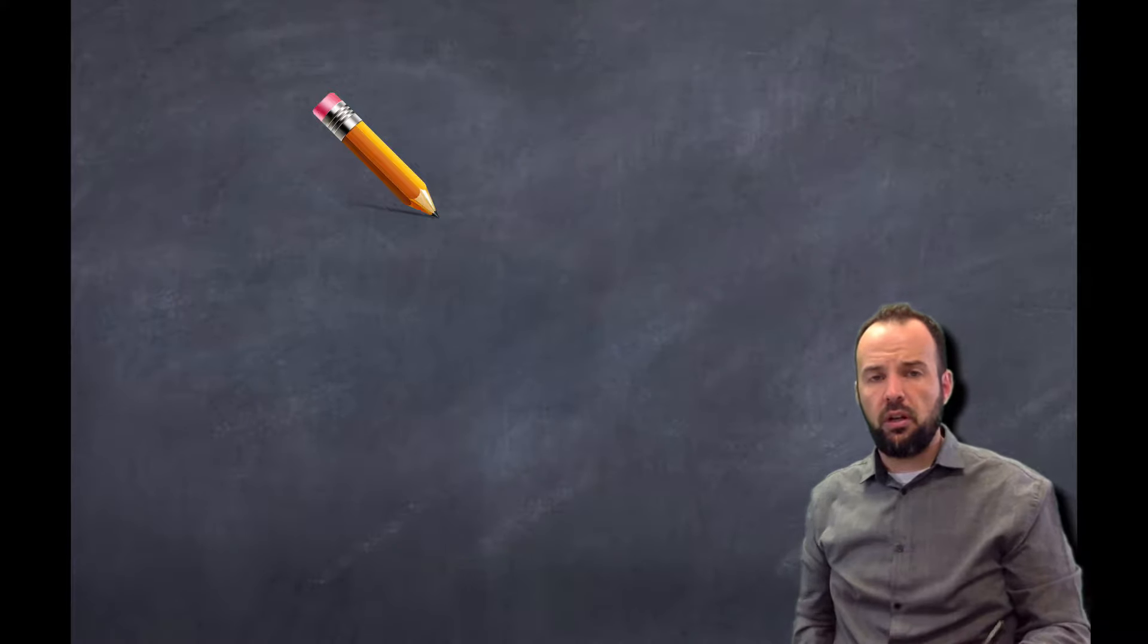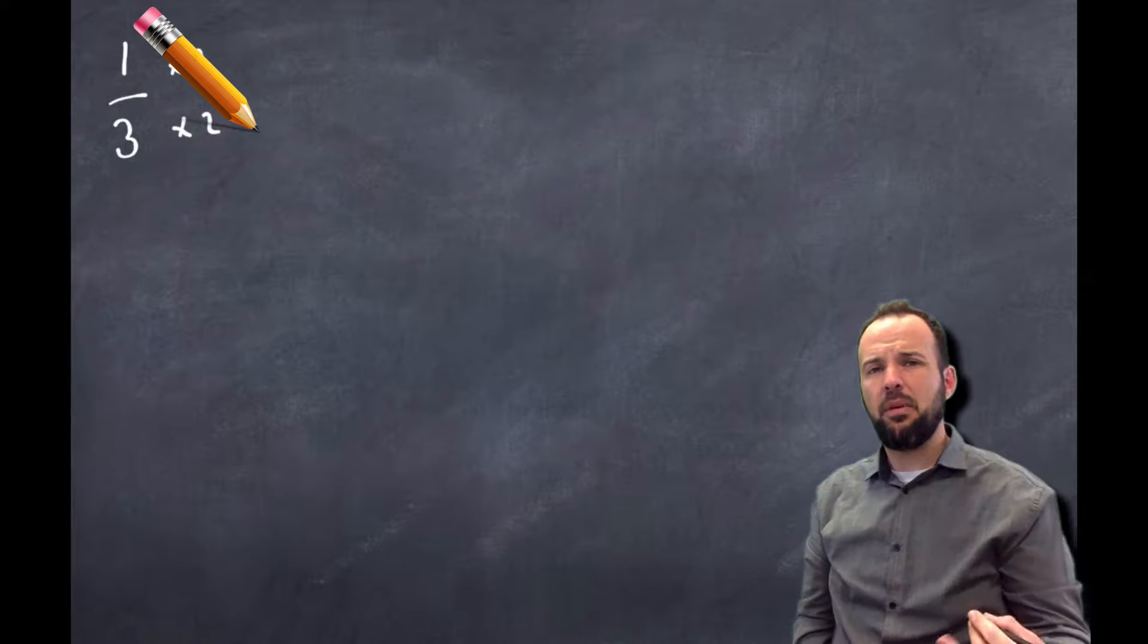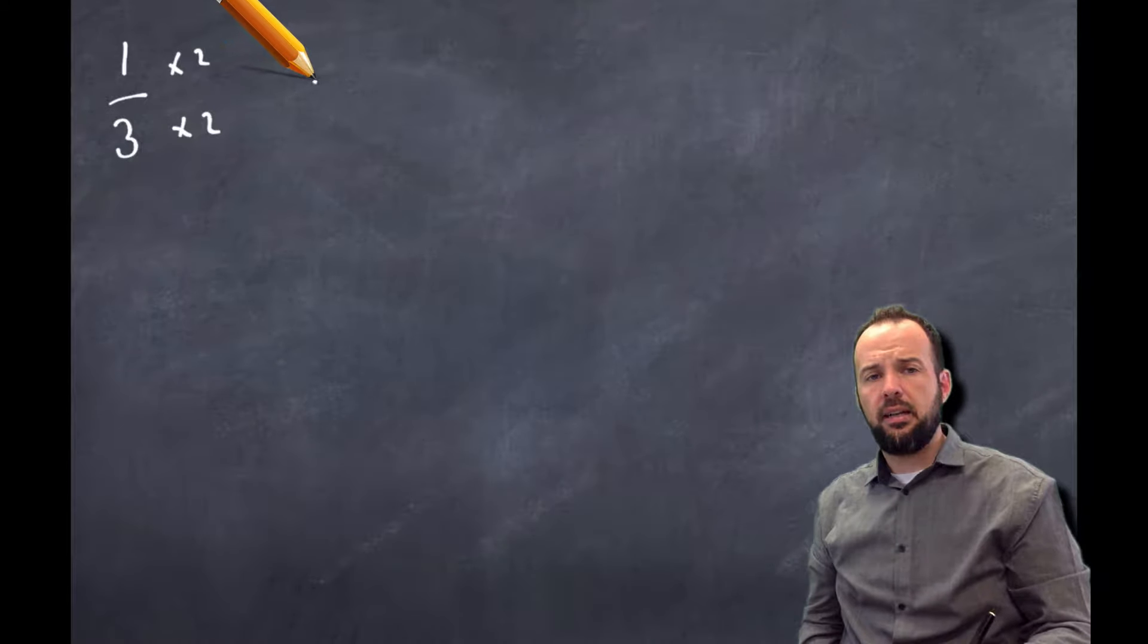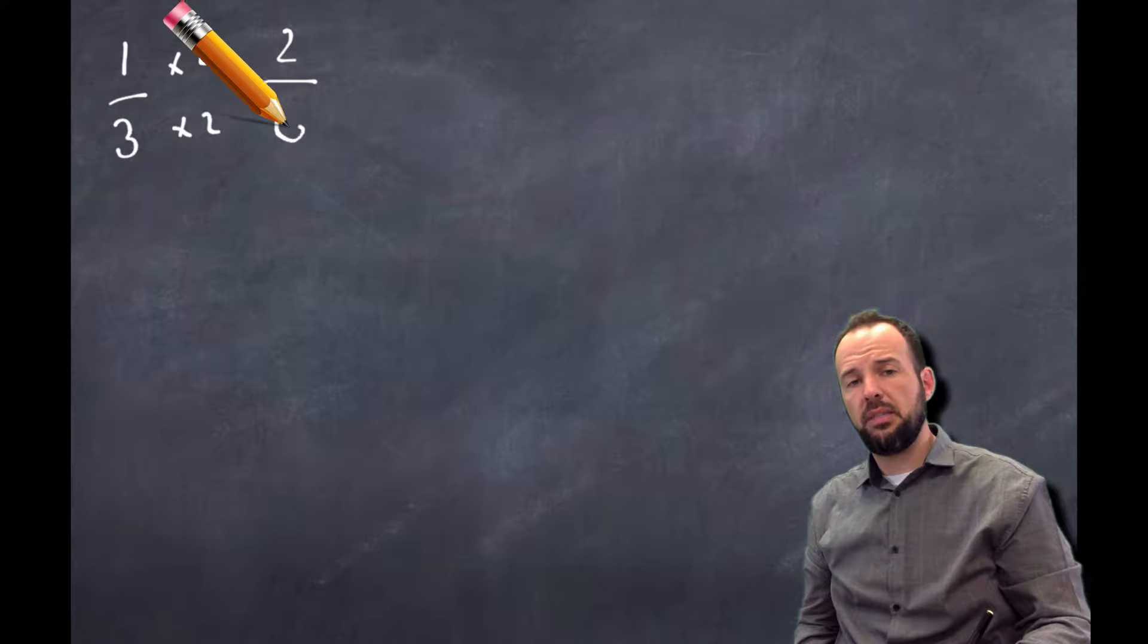So first of all, starting off, we talked yesterday about if we had a fraction, let's say 1/3, and we multiplied our numerator and our denominator by the same number, we would get an equivalent fraction. So 1 times 2 would be 2, 3 times 2 would be 6, right?